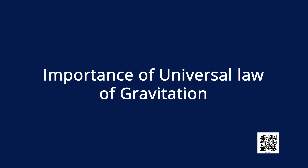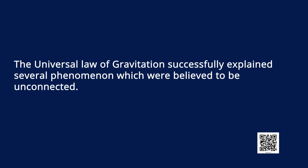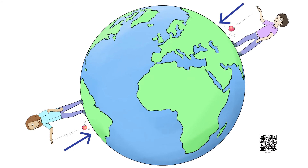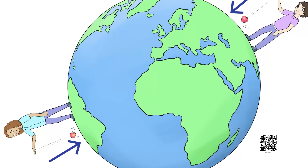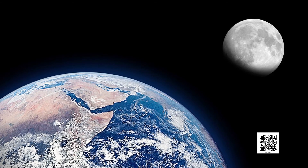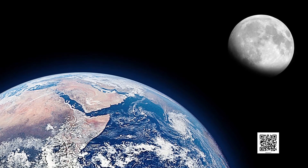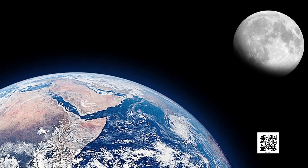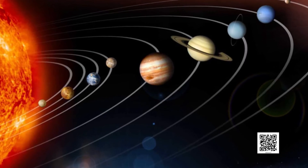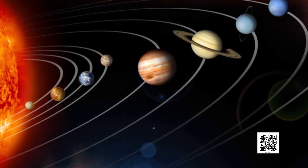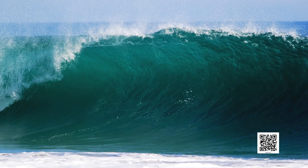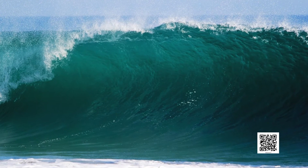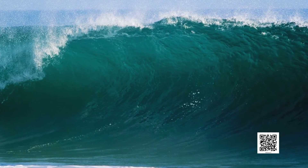Now let us learn the importance of the universal law of gravitation. The universal law of gravitation successfully explained several phenomena which were believed to be unconnected: this is the force that binds us to the earth, the force responsible for the motion of the moon around the earth, the motion of planets around the sun, and the force responsible for the occurrence of tides due to the moon and the sun.